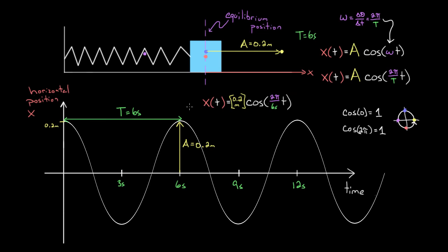If you just want the function for position as a function of time, you leave little t as the variable. If I wanted to know the position at nine seconds, I'd plug in nine seconds and calculate the function. Or if I wanted the position at 12.25 seconds, I'd plug in 12.25 seconds—that would give me the position at that time.